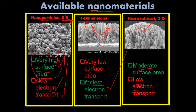The hierarchical structure has moderate surface area but low electron transport. What we need is a material which has both high specific surface area and fast electron transport — both green properties in a single material. We need a material which gives us one-dimensional nature as well as high or moderate specific surface area.